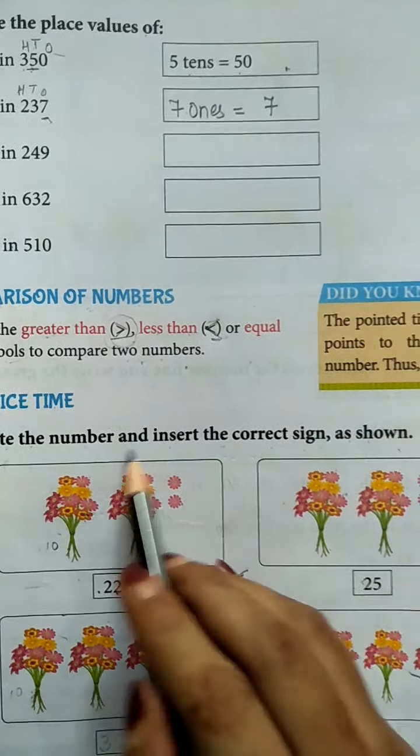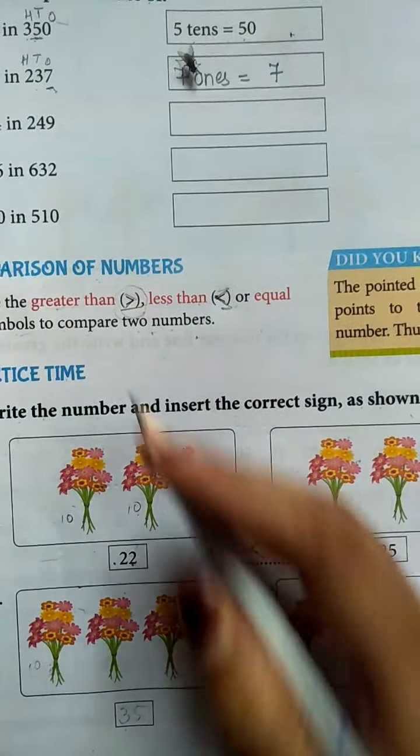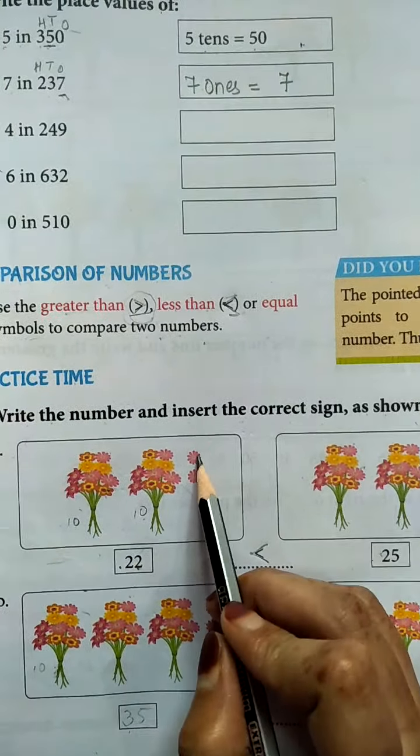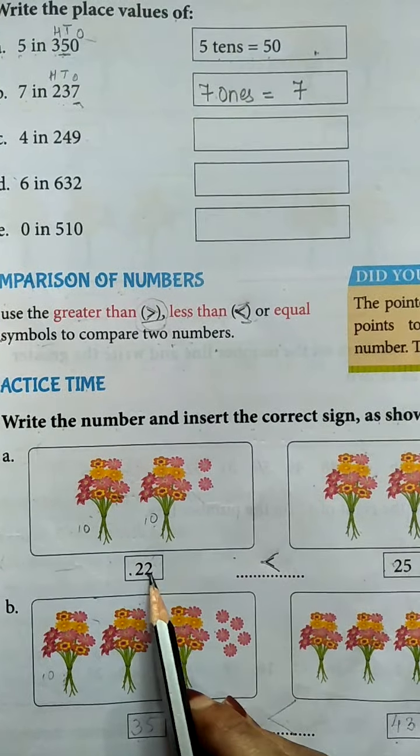10. Now same, 10. 10 plus 10, 20. Next 21, 22. Already written here, 22.